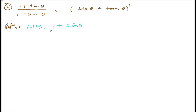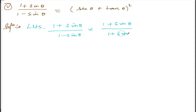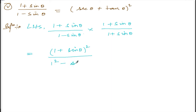Left hand side is (1 + sinθ) divided by (1 - sinθ). I need to convert this into secθ and tanθ. So multiply both sides by (1 + sinθ), so that I can get the (a - b)(a + b) form in the denominator. The numerator becomes (1 + sinθ)² and the denominator becomes a² - b², which is 1 - sin²θ.